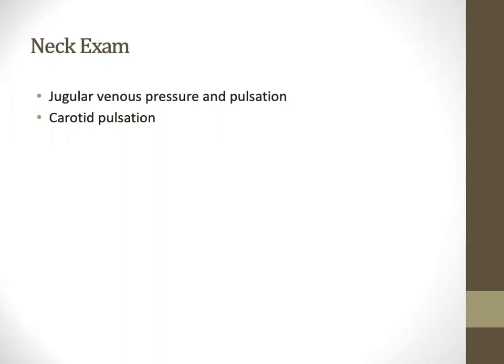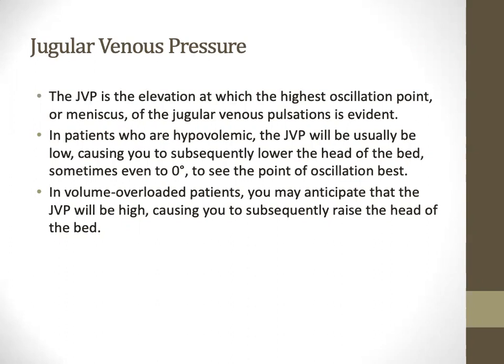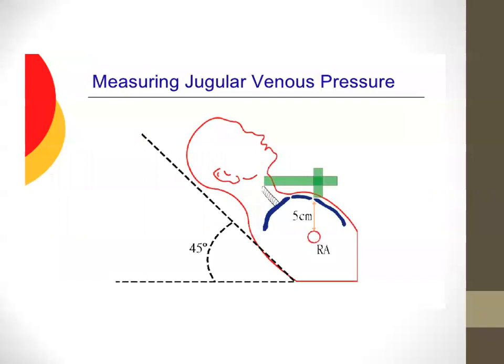JVP is essentially the point at which you see the highest oscillation — also referred to as the meniscus — of the jugular venous pulsations. In hypovolemic patients, JVP may not be easily visible and you may need to lower the head of the bed, sometimes even lay them supine to see it. In volume-overloaded patients, the JVP is elevated and you may need to raise the head of the bed even higher than normal.